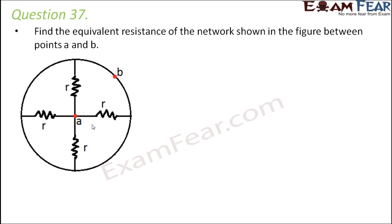Question number 37: find the equivalent resistance of the network shown in the figure between points A and B. When you look at this figure, it is very difficult to find out which resistances are in series and which are in parallel. So we will draw a simplified version of the same circuit.